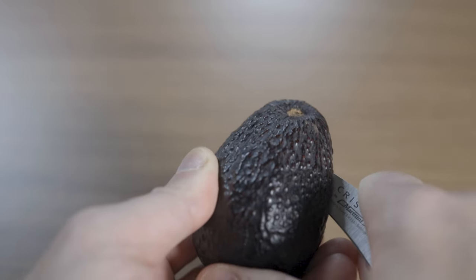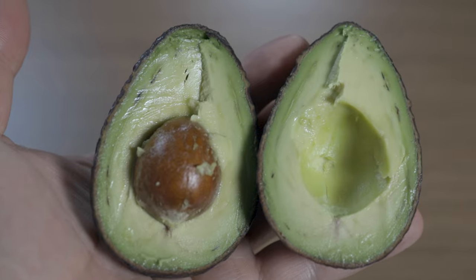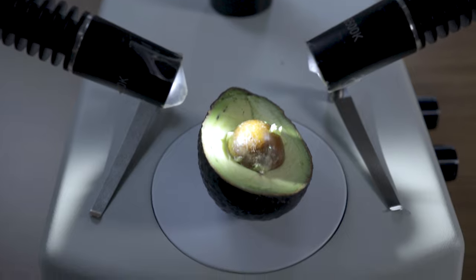Avocado skin is very strong for a reason. It keeps the fruit intact and protects the seed. Let's put it under the microscope and take a closer look.